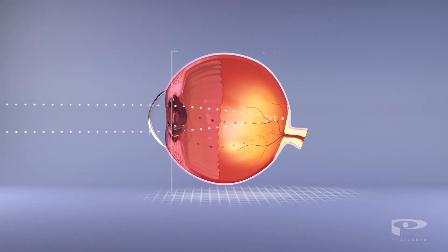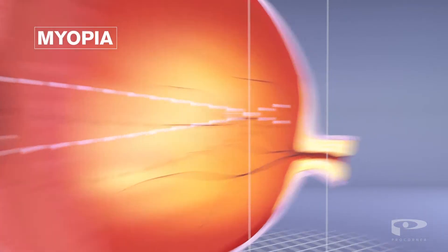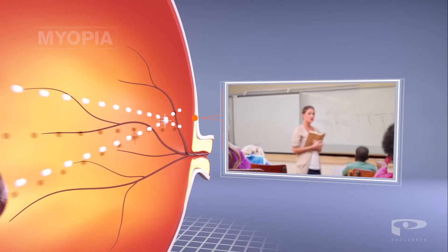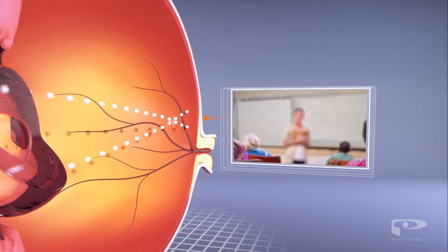In the case of myopia or nearsightedness, the eye grows too long. Light then focuses on the front of the retina, after which it disperses, causing distance vision to become blurred.